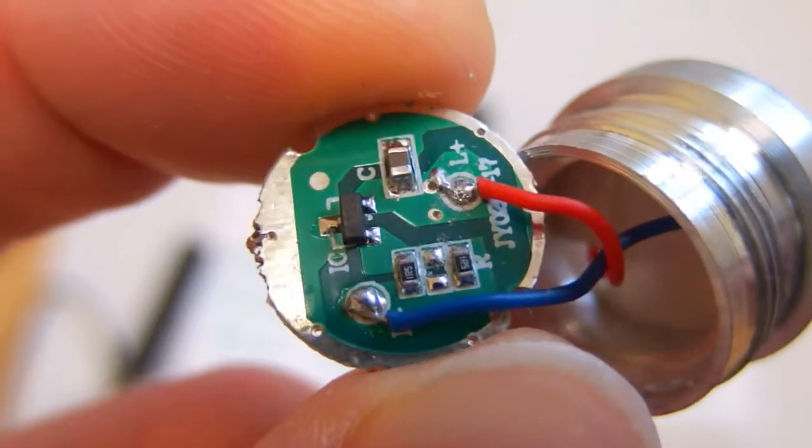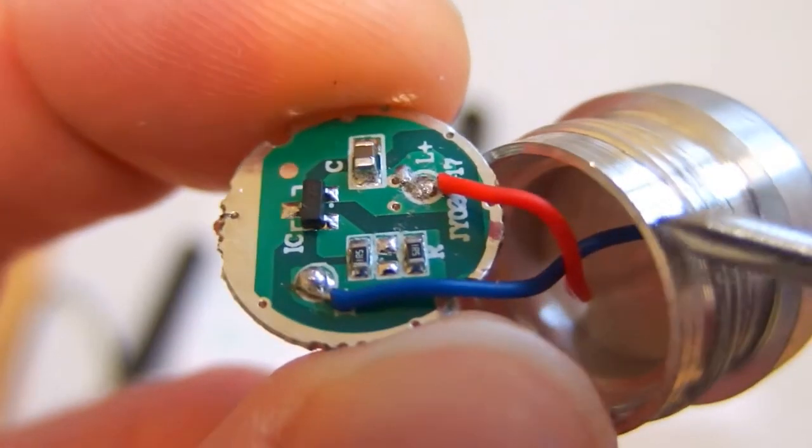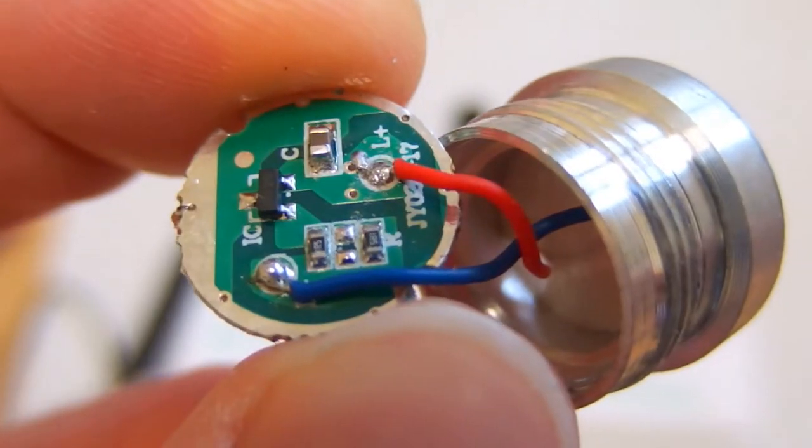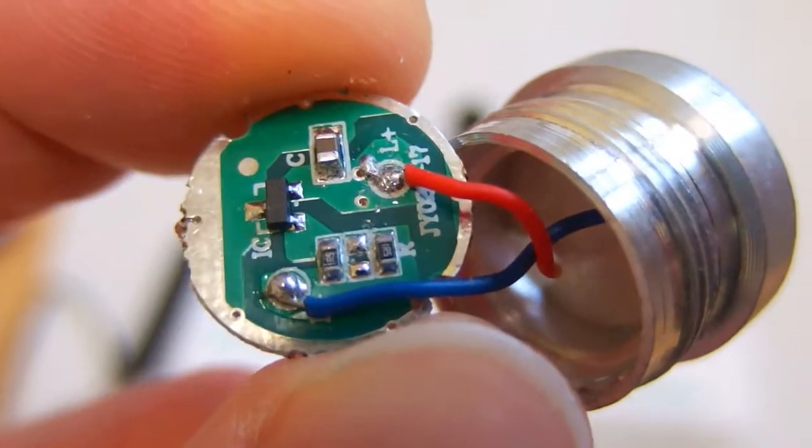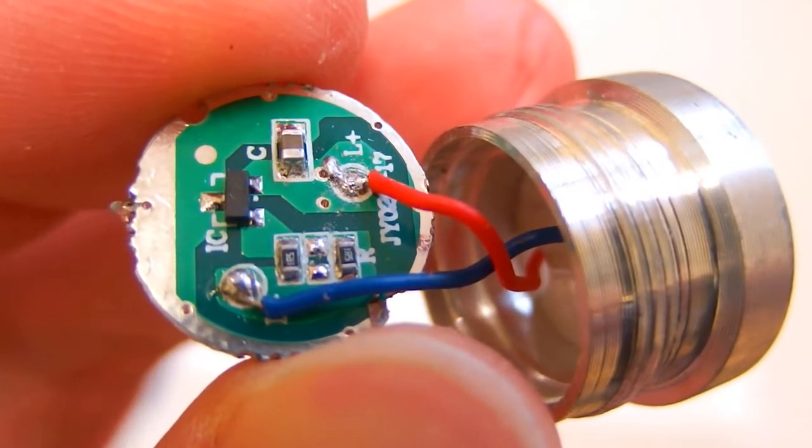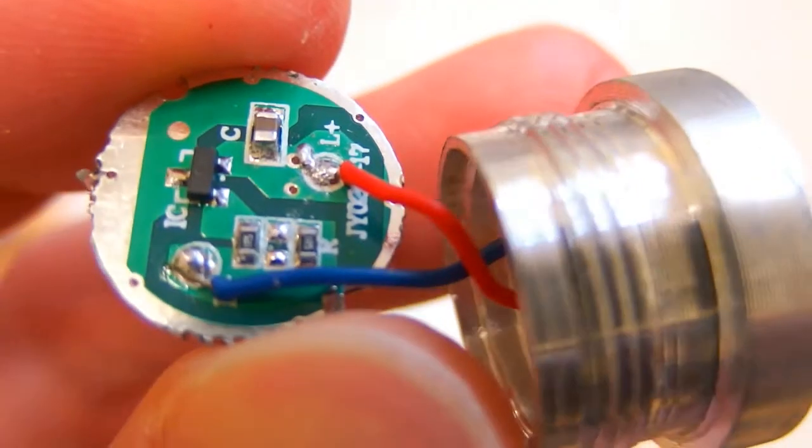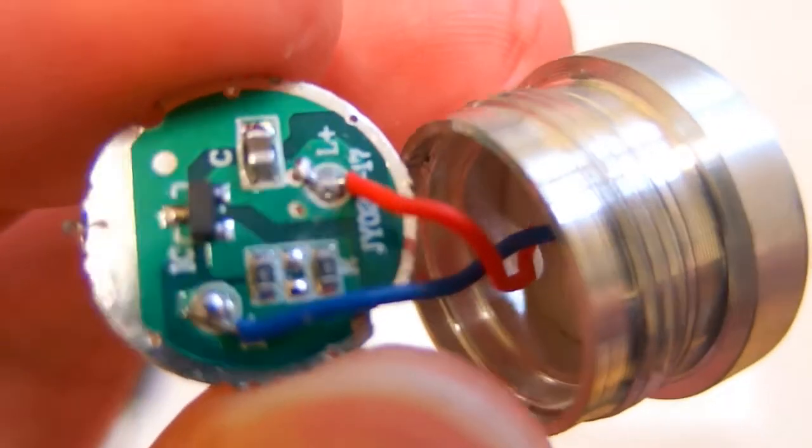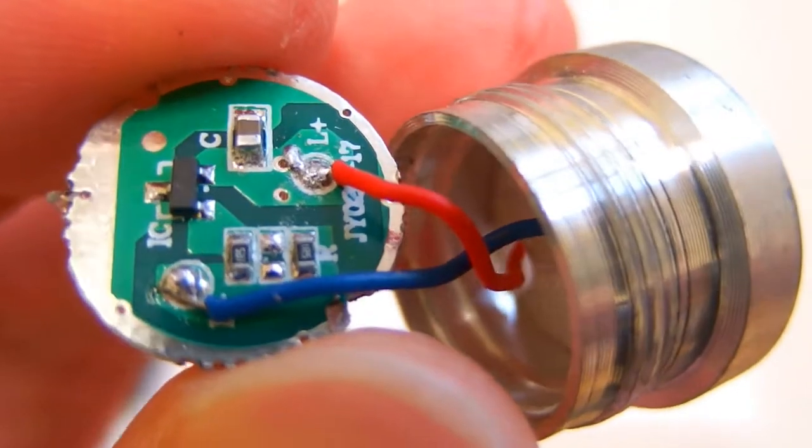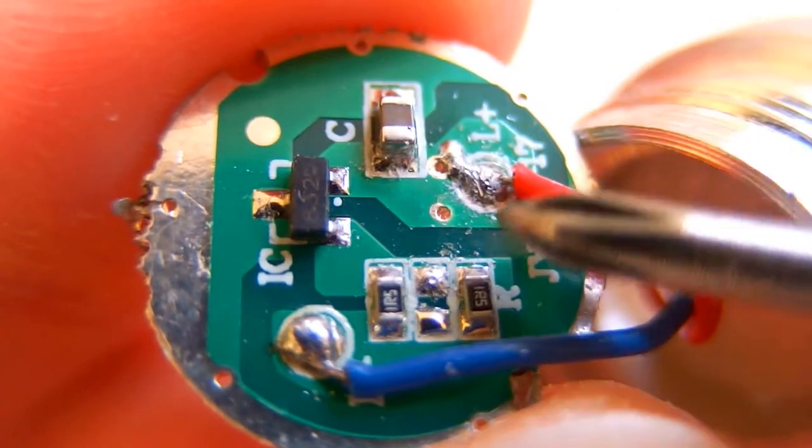And the disadvantage of this design is that there is no current regulation, so the brightness of the LED will decline as the battery discharges. And there is no low voltage cutoff, so the design only relies on the fact that at low voltages the LED draws very low current.